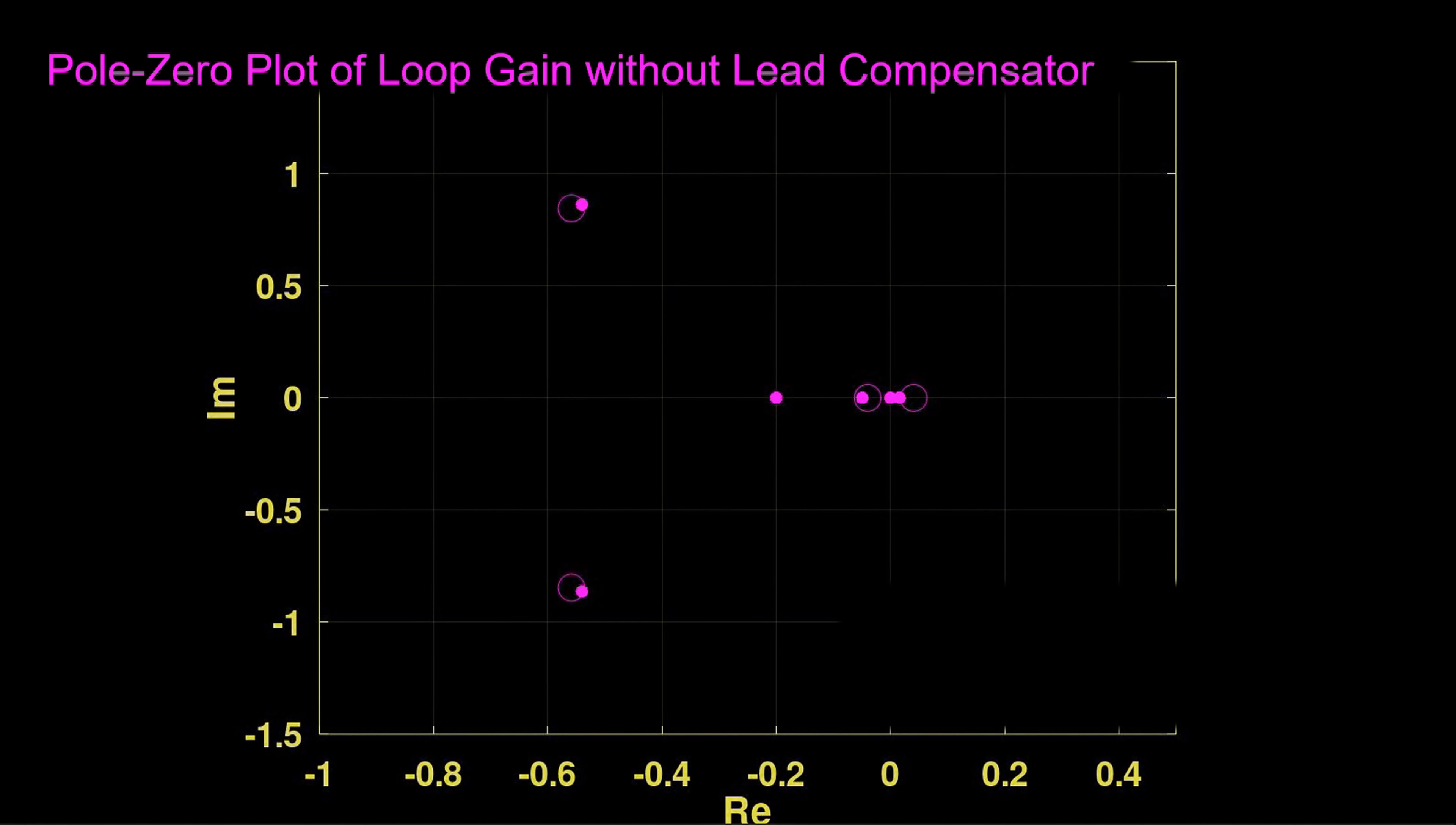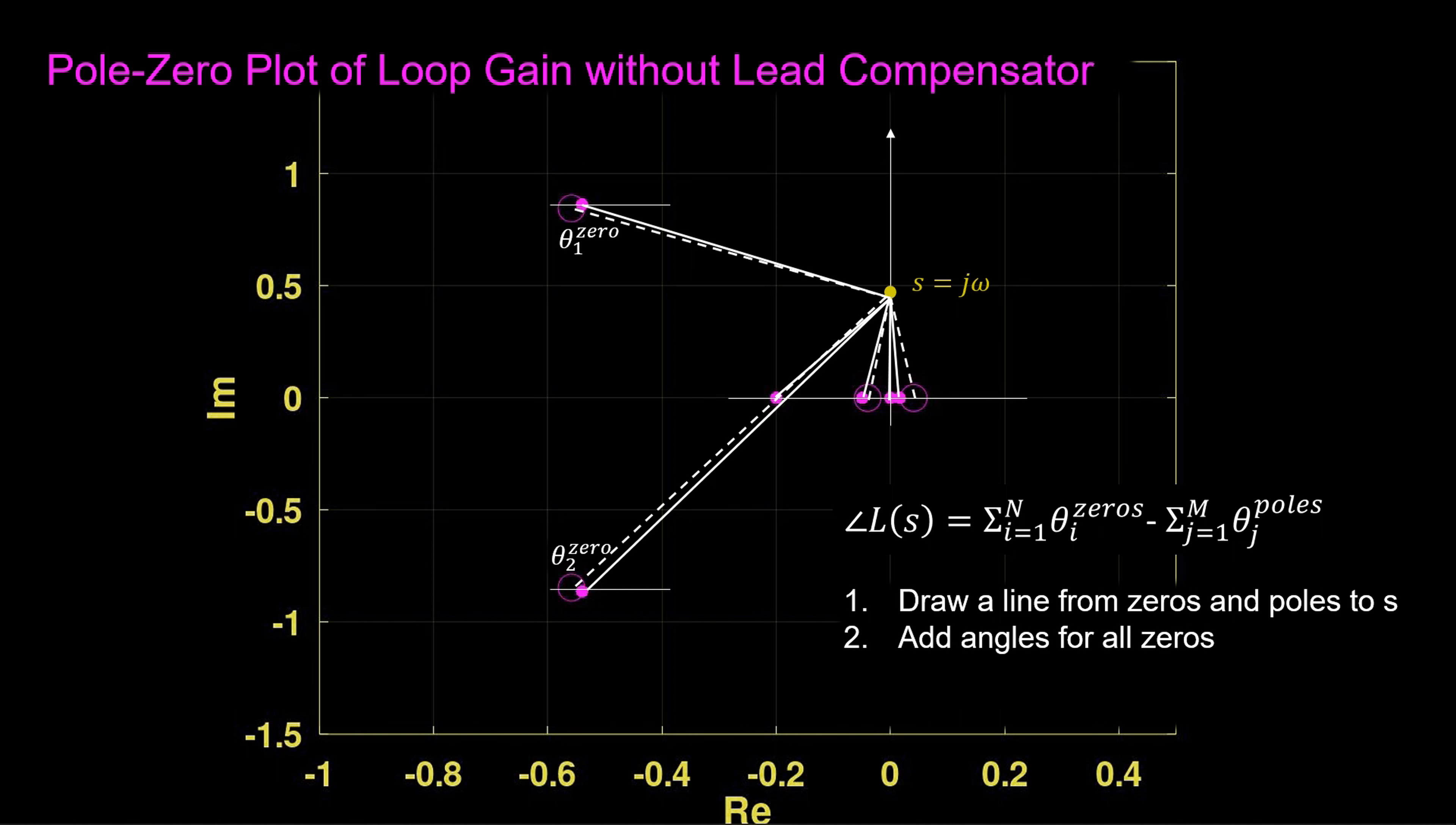We can view what's happening with the phase angle geometrically. This is a pole zero plot of the loop gain without the lead compensator. Dots are poles, circles are zeros. At any frequency s, the phase angle of this transfer function is the difference between the angles of the zeros and the angles of the poles. To get this, draw lines from the zeros and poles to the value of s. Add all angles for the zeros, then add angles for all poles. Again, measure from the horizontal. The phase angle at that frequency is the difference between the sum of the zero angles and the sum of the pole angles. Here we only notate a few of the angles for illustrative purposes.